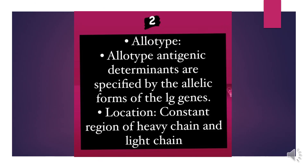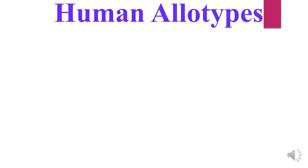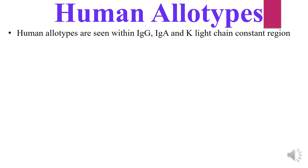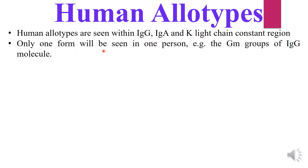The second type of antigenic determinants are the allotypes. Allotype antigenic determinants are specified by the allelic forms of immunoglobulin genes. The location of allotypes is in the constant region of heavy chain and light chain, lying in the Fc region of the immunoglobulin. Human allotypes have been seen within immunoglobulin G, A, and the kappa light chain constant region. Only one form will be seen in one person — for example, the GM groups of the immunoglobulin G molecule.